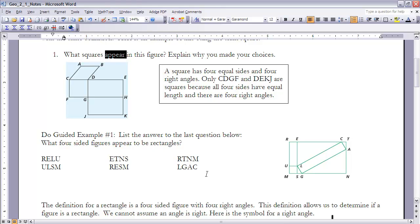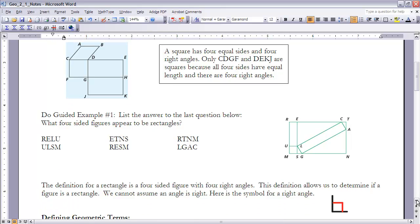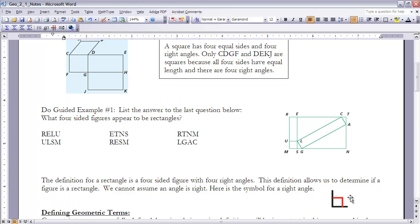This definition allows us to determine if a figure is a rectangle. We cannot assume an angle is right. So when we're looking at a rectangle, it's more important that we know that those angles are right angles. And the symbol that we'll use for that is the symbol right here. So anytime you put a little square box in the angle that would indicate that it's a right angle. So in that guided example, those are the ones that appear to be right angles. In order for us to know that for sure, we would have to have markings indicating that they were right angles.